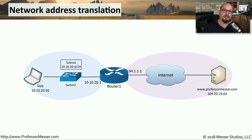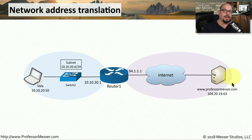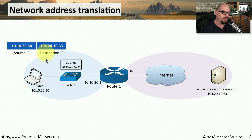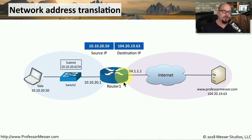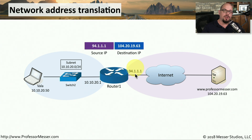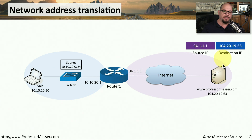Network Address Translation literally changes, or translates, one IP address to another. For example, we have an internal network where Vala has her laptop, and she wants to communicate out on the public internet to my website, professormesser.com. When she sends traffic from her workstation, the source IP will be that of her laptop, which is 10.10.20.50, and she wants to communicate to my web server, which is 104.20.19.63. When she sends this information to her router, the router has been configured to perform Network Address Translation, and it changes the source IP from her internal address to the external address on the public internet, and then sends that information to my web server.